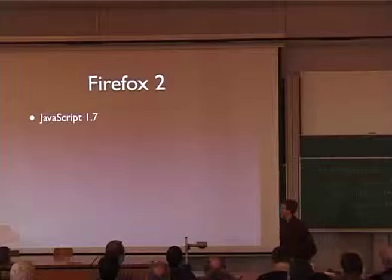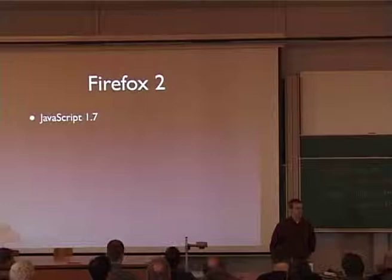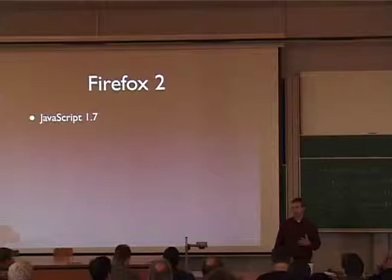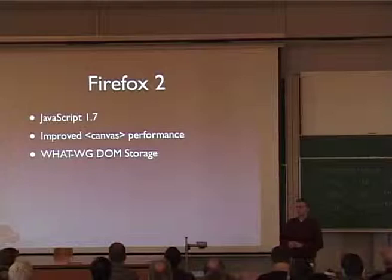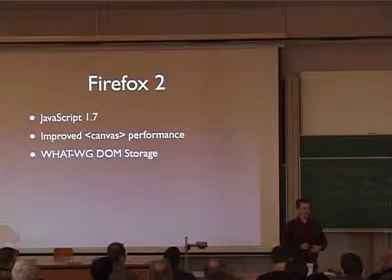Let's talk a little about Firefox 2. Firefox 2 shipped in October of last year. It included a number of features important to how you build inside the content window — features relevant to how you build content for the web. Among them is JavaScript 1.7, and I'm going to take you through that in a lot of detail. An improved performance of the Canvas tag. We also introduced WhatWG DOM storage for the first application — one of the building blocks that will allow you to take your web applications off the web and use them on an airplane.